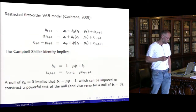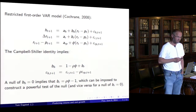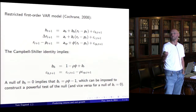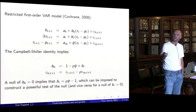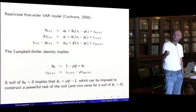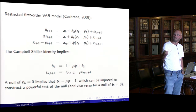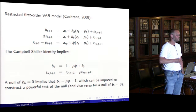For statistical testing, we follow Cochrane's approach and set up a first-order VAR system. We have one forecasting variable — the RP ratio — on the right-hand side, with returns, rent growth, and the RP ratio itself on the left. This is a restricted first-order VAR where all other coefficients have been set to zero to focus on the RP ratio. We measure return predictability by looking at the coefficient B_H in the returns equation, and rent growth predictability by B_R.